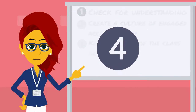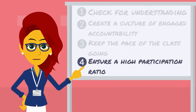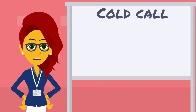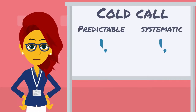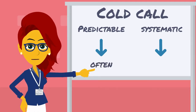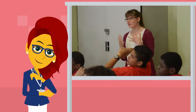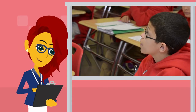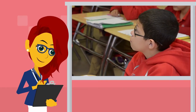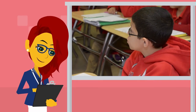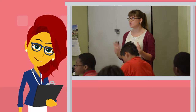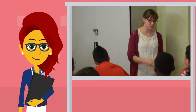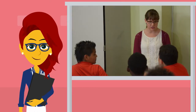The fourth purpose is to ensure a high participation ratio. You'll want to keep the cold call predictable and systematic — use the practice often and call on different students. For example: 'Garrett, can you talk about what factors are?' Garrett: 'They are two numbers that multiply together to get 18, or whatever you're trying to do.' Teacher: 'I like that. So Nathan, can you repeat back what Garrett said — what is a factor again?'